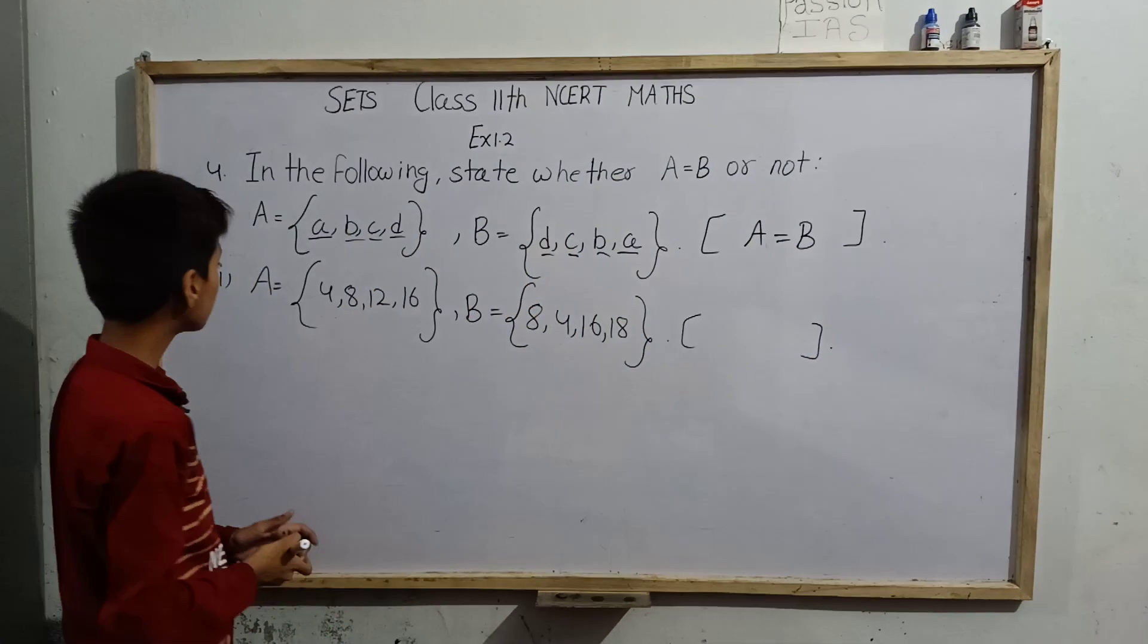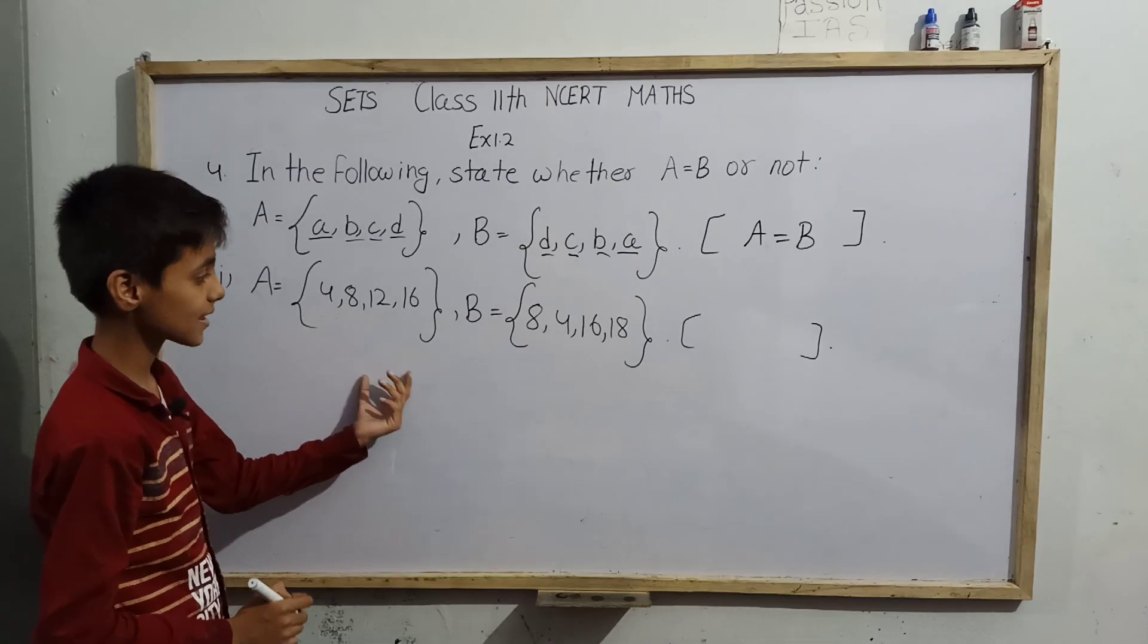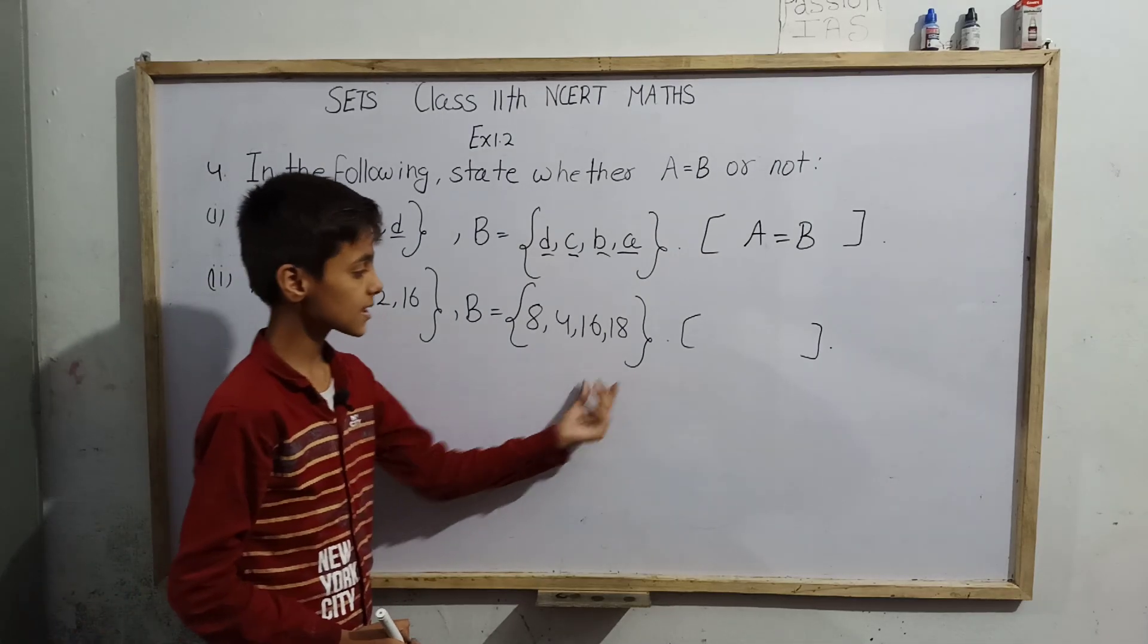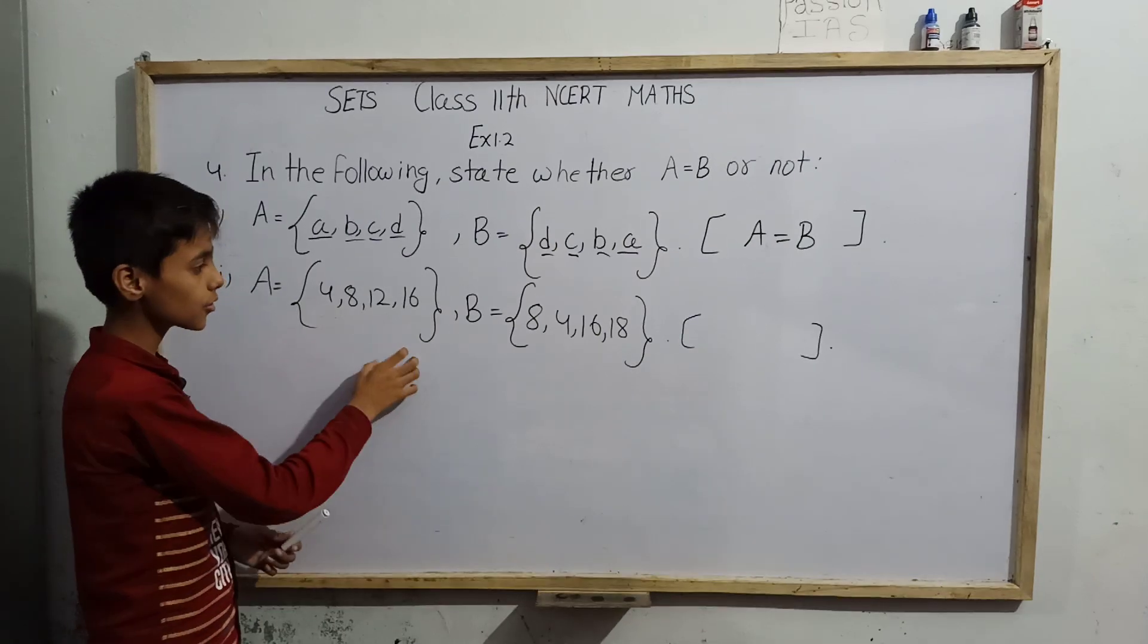Next we can see here, A equals {4, 8, 12, 16} and B equals {8, 4, 16, 18}. Number of elements: 4, 4. Now, 4 is present in this set and in this set.